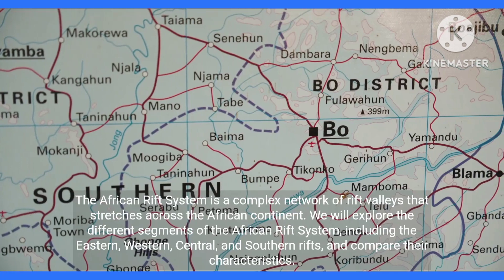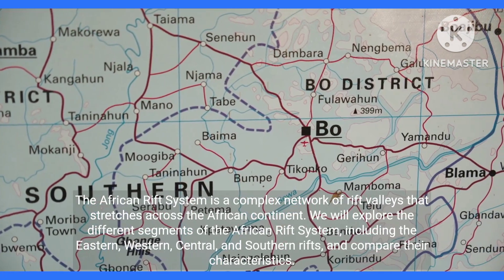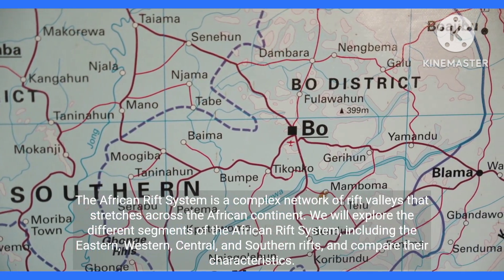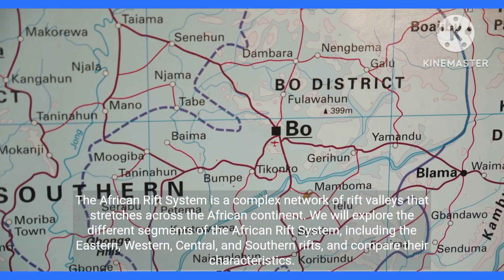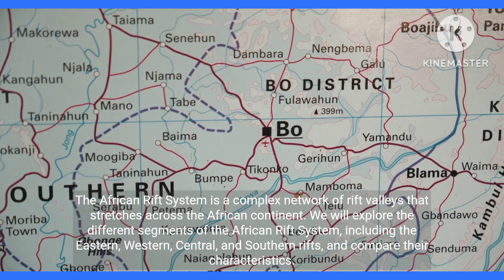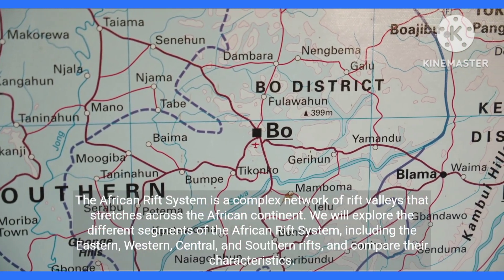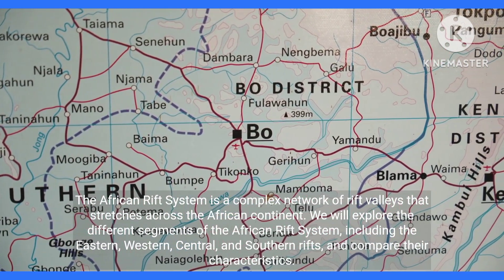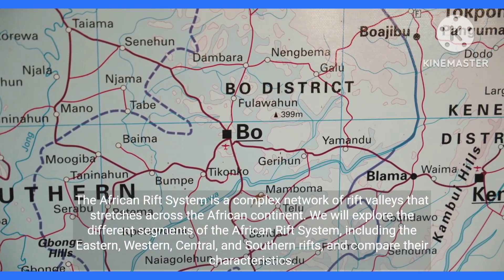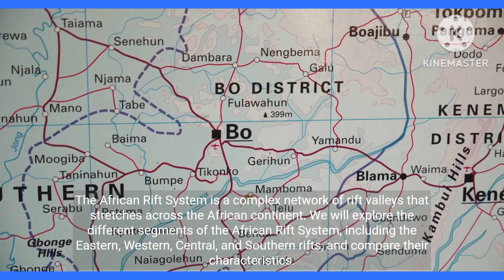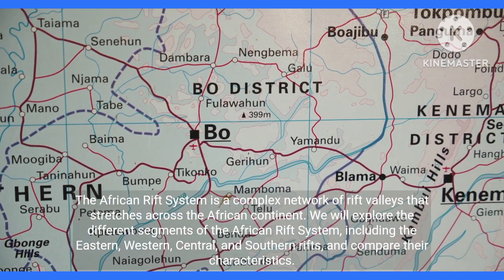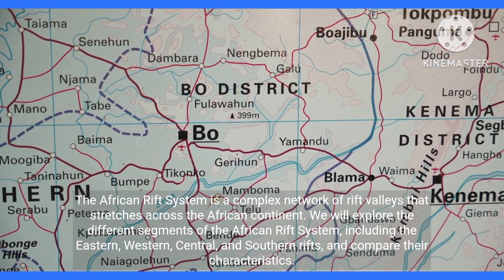The African rift system is a complex network of rift valleys that stretches across the African continent. We will explore the different segments of the African rift system, including the eastern, western, central, and southern rifts, and compare their characteristics.